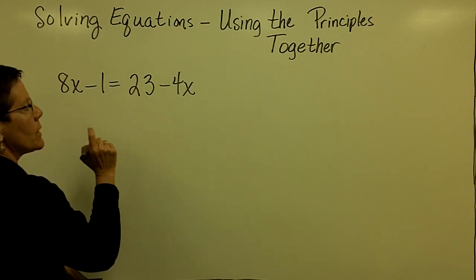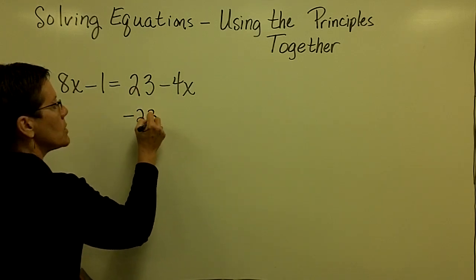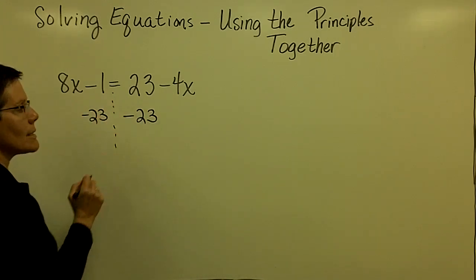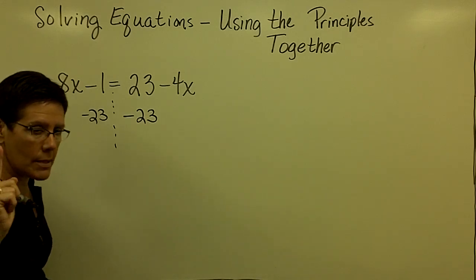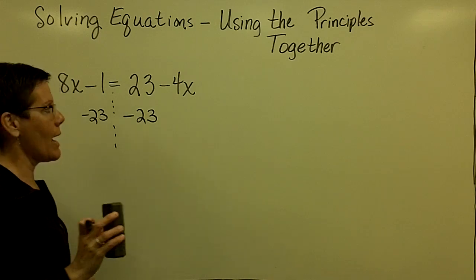Another one of my options, look at that 23 right there. There's a plus sign in front of it. So another one of my options would be to subtract 23 from both sides of the equation. I don't want to do that either right now, but it is a viable option.